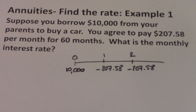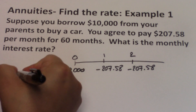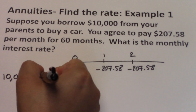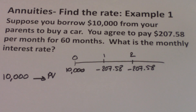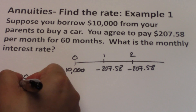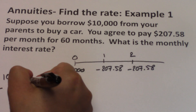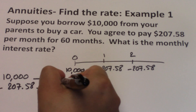The $10,000 happens earlier on the timeline as the cash inflow to you, so $10,000 will be your PV. The $207.58 is the money that you're paying each period, so it will be negative $207.58 — that will be your PMT.